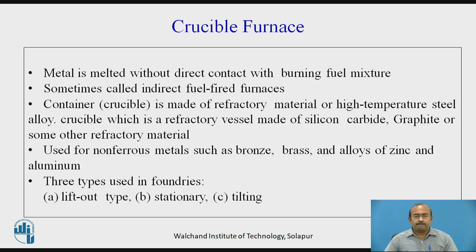Crucible furnace: metal is melted without direct contact with the burning fuel mixture, sometimes called an indirect fuel fired furnace. The container — that is, the crucible — is made up of refractory material or high temperature steel alloy. The crucible is a refractory vessel made up of silicon carbide, graphite, or some other refractory material. It is used specifically for non-ferrous metals such as bronze, brass, and alloys of zinc and aluminium.